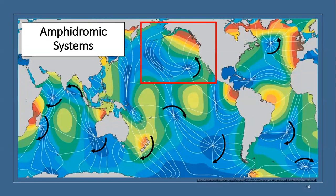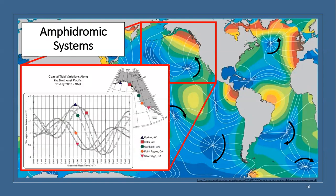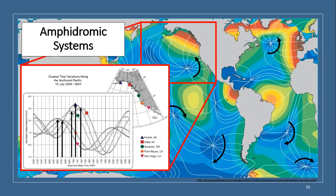For example, along the west coast of North America, an amphidromic system is rotating counterclockwise. Upon closer look, we can compare tidal charts for five locations along the west coast. By doing so, we can determine that high tides in San Diego arrive first. As the amphidromic system rotates counterclockwise, high tides will progressively arrive in Point Reyes, California; Garibaldi, Oregon; Sitka, Alaska; and finally Kodiak, Alaska.